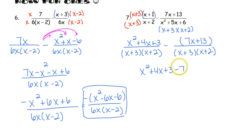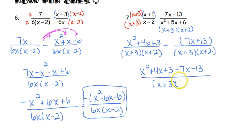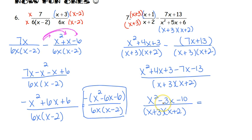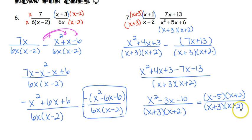We distribute that negative to get minus 7x minus 13, all over (x plus 3)(x plus 2). Combining like terms: 4x minus 7x is negative 3x, and 3 minus 13 is negative 10. So the numerator is x squared minus 3x minus 10. We factor: two numbers that multiply to negative 10 and add to negative 3 are negative 5 and positive 2, giving (x minus 5)(x plus 2). The (x plus 2) cancels with the denominator, leaving x minus 5 all over x plus 3.